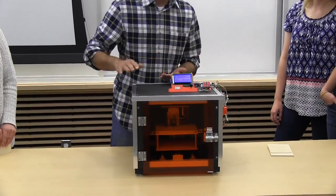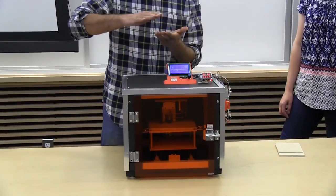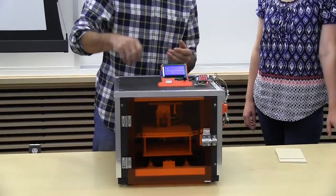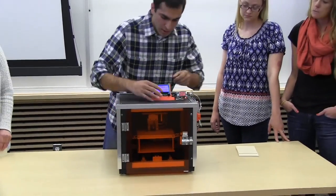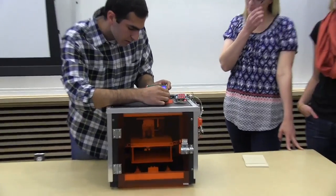The Arduino controls the CNC axis on which the two-dimensional image is burned in with the laser, and you select your G-code on the LCD screen.